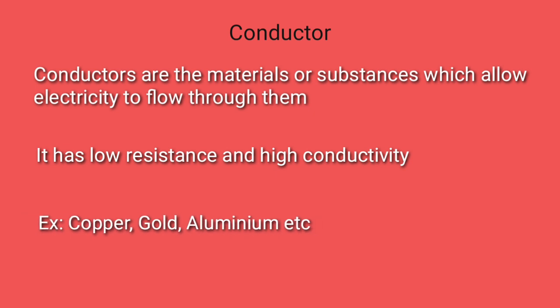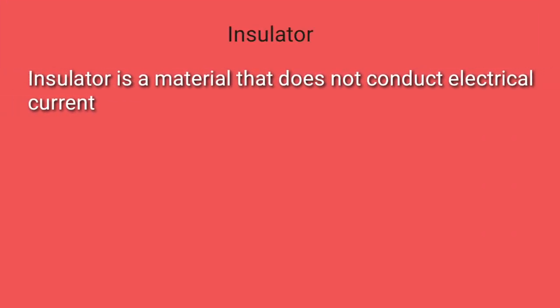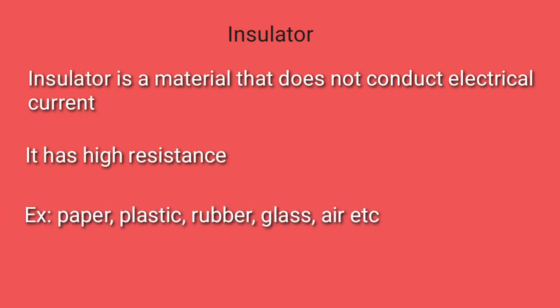Examples of conductors include copper, gold, aluminum, etc. Moving on to the insulator: an insulator is a material that does not conduct electrical current. It has high resistance. Examples include paper, plastic, rubber, glass, air, etc.